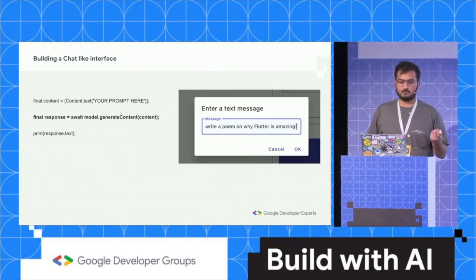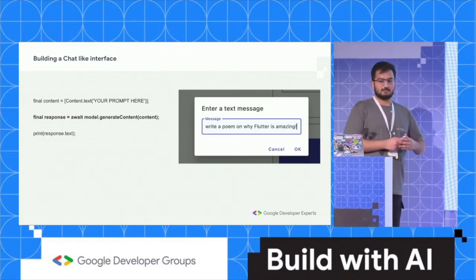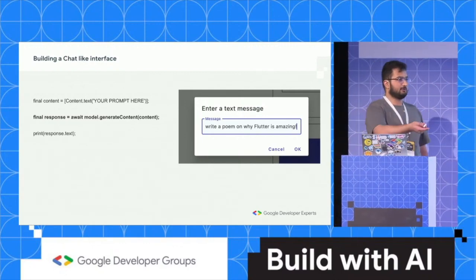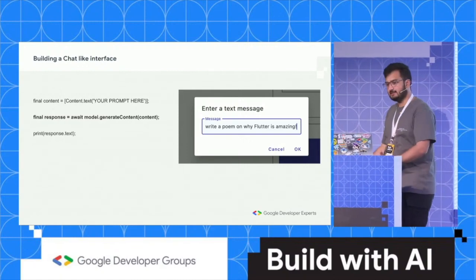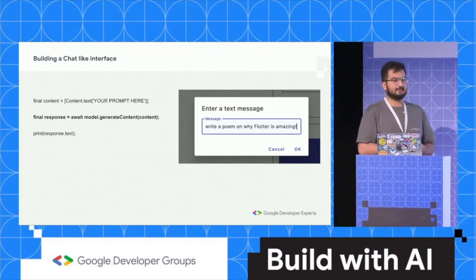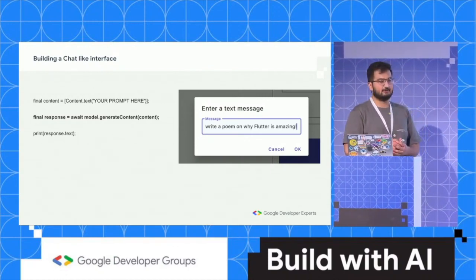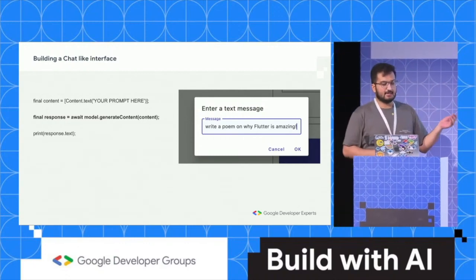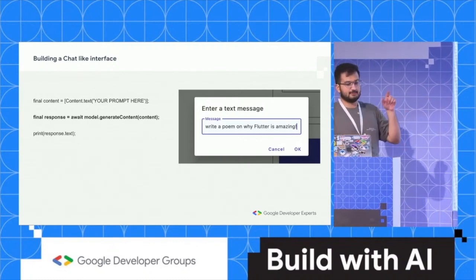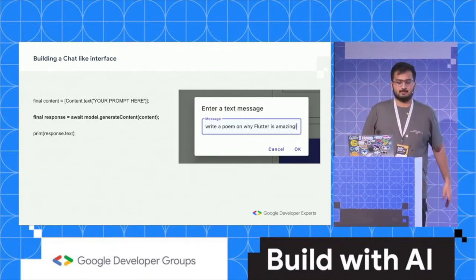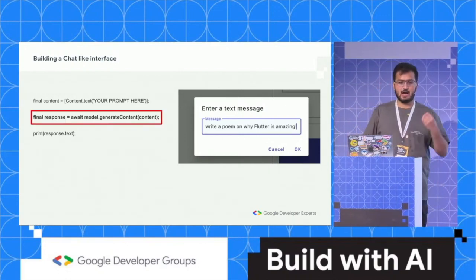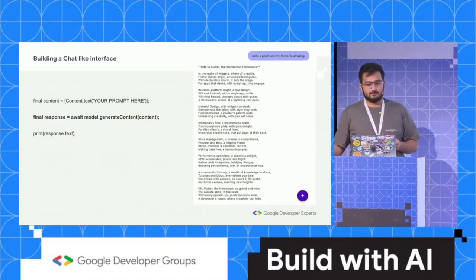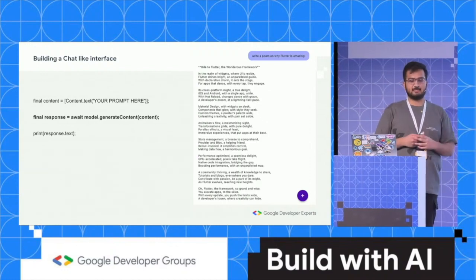The first thing I want to focus on is building a chat-like interface. In Flutter, we can create a simple text field that takes in input from the user. This text field has a controller which gives you access to the text inside the field. Once I have that, I can take that text and pass it as content to my Gemini model — model.generateContent — passing in an iterable content variable as a list, like content.text, to get a response. You can give it a simple question like 'write a poem on why Flutter is amazing' and it gives you back a response that can be rendered on the UI.